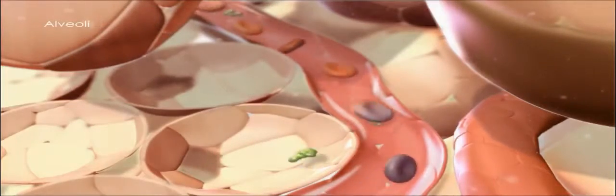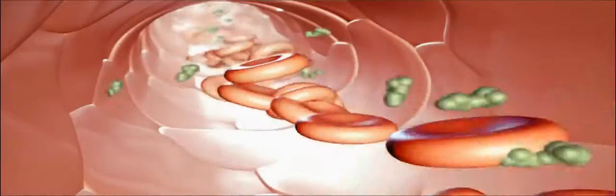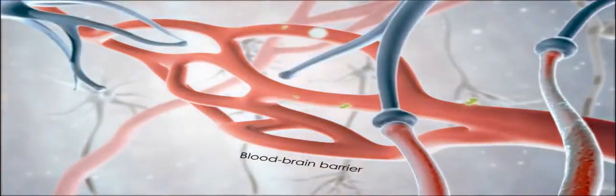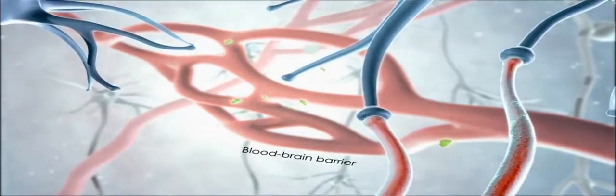When exogenous cannabinoids are inhaled, they travel through the respiratory tract to the alveoli of the lung where they diffuse rapidly into the circulatory system.